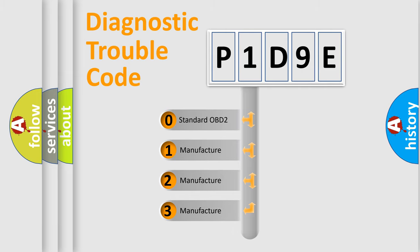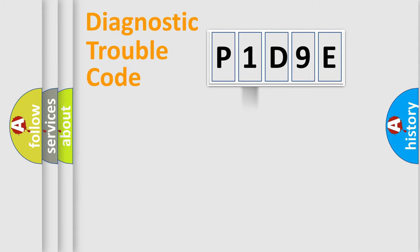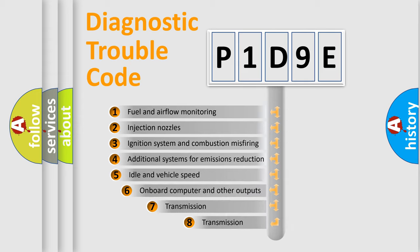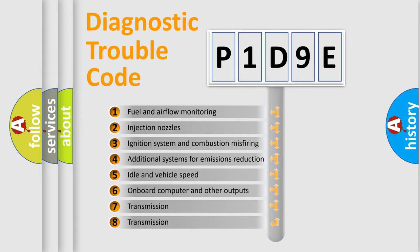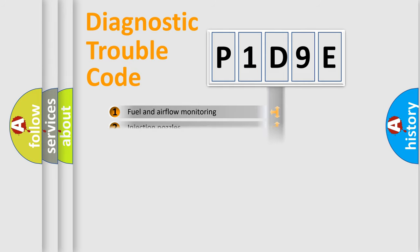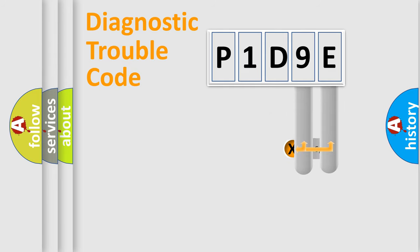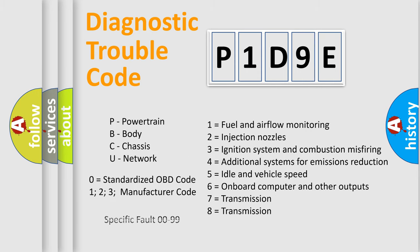If the second character is expressed as zero, it is a standardized error. In the case of numbers 1, 2, 3, it is a car-specific error. The third character specifies a subset of errors. The distribution shown is valid only for the standardized DTC code. Only the last two characters define the specific fault of the group. Let's not forget that such a division is valid only if the second character code is expressed by the number zero.